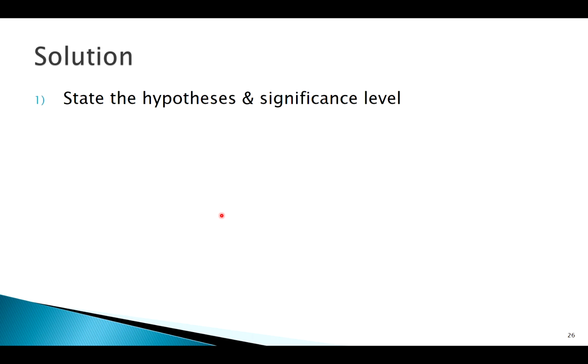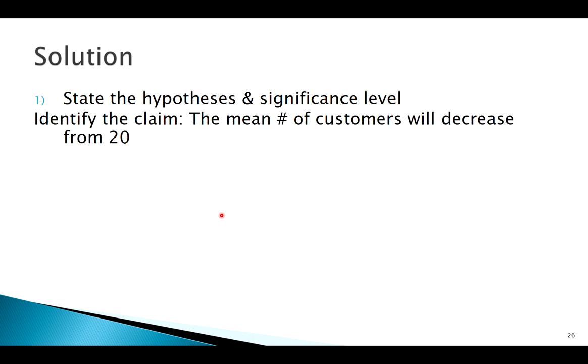First, we've got to state our hypotheses and significance levels. We want to see if it's actually decreased from 20. So our starting point is 20, and we're going to run a left-tailed test because we want to see has it decreased.